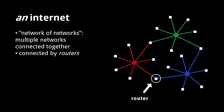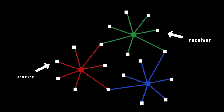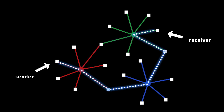Here we have three networks, each connected to the other two via routers. If a host on the red network wishes to send data to a host on the green network, the data is sent either through the router connecting the red and green networks, or through the router connecting the red and blue networks, and then through the router connecting the blue and green networks.